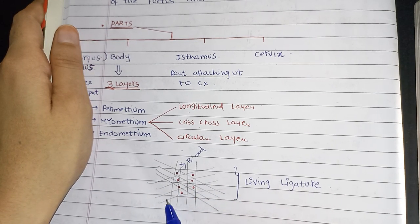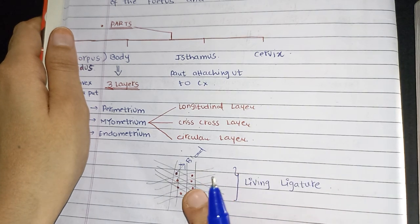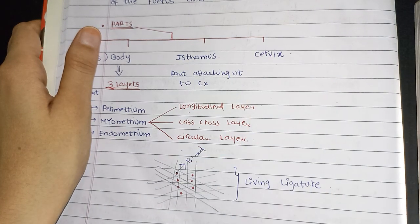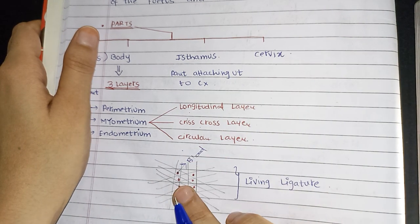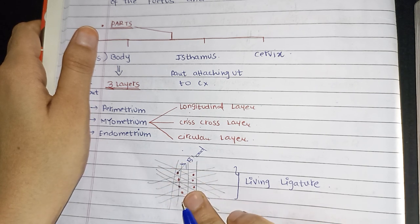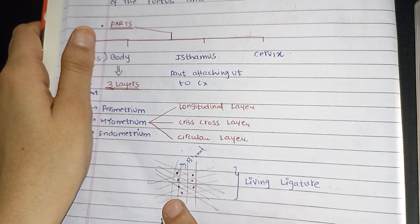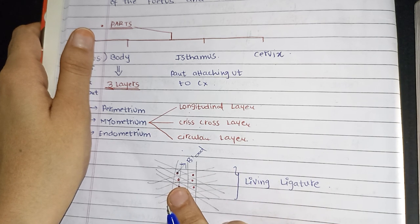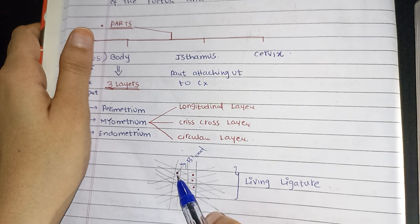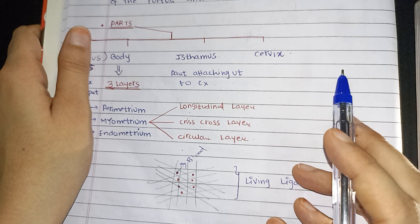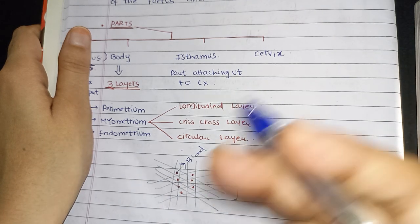This pattern is only responsible for the shutting of blood vessels. During delivery, contraction occurs; during contraction, these muscles contract and the blood vessels get shut. After delivery, the uterus immediately has to be contracted. If it does not get contracted, it will lead to massive hemorrhage — that is postpartum hemorrhage, or bleeding after the delivery — and then shock.